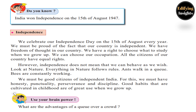One last question: use your brain power and answer — what are the advantages of a queue over a crowd? A crowd is a chaotic way of life, whereas a queue is a disciplined way of life. It shows our concern for the well-being of others and ensures smooth community life. So it is better to form a queue instead of crowding.